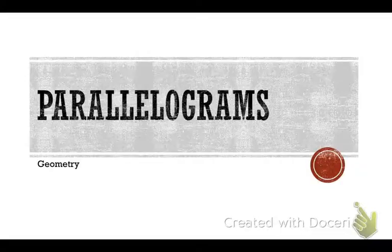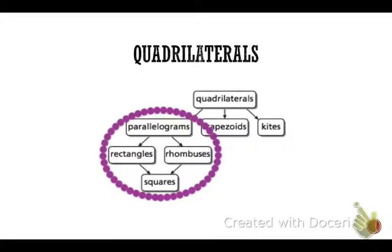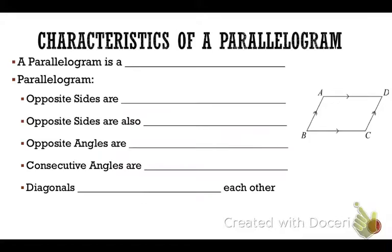We've learned a lot about polygons in this unit, and in this concept we're going to learn about some very specific polygons called parallelograms. This graphic talks about quadrilaterals — those are four-sided figures — and all parallelograms are quadrilaterals. In this video we're going to look at different types of parallelograms: rectangles, rhombuses, squares, and just parallelograms. We're going to learn a lot of characteristics about each of these four, and you need to write them down and memorize them because you will be tested on them.